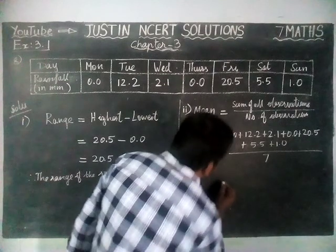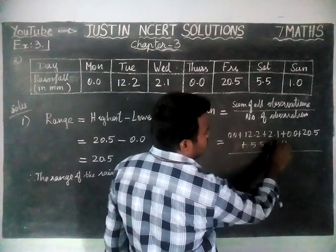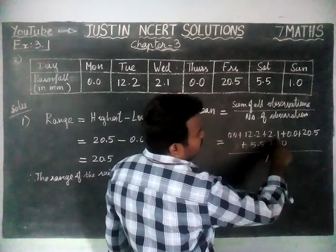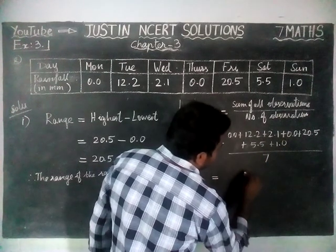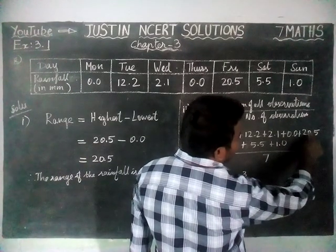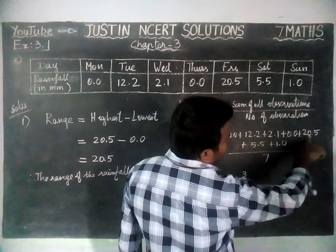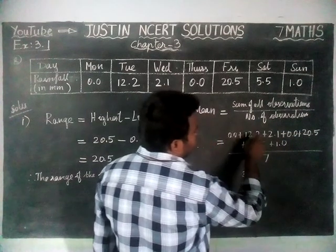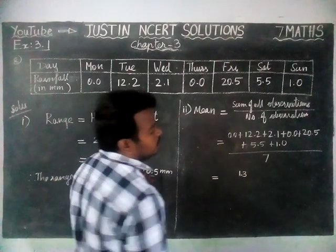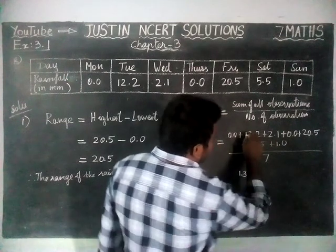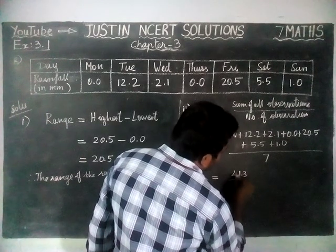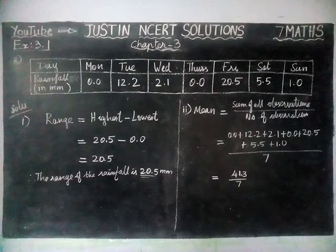Now we have to add all the decimal places first. Adding the decimal digits: 0, 5, 10, 11, 13 — so we write 3 and carry 1. In the whole number part, adding gives us 41, plus the carried 1. The total sum is 41.3, divided by 7.